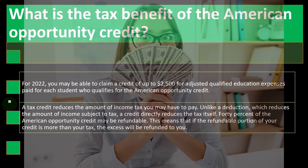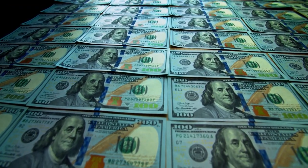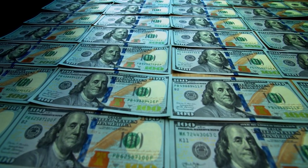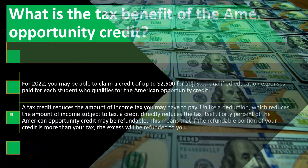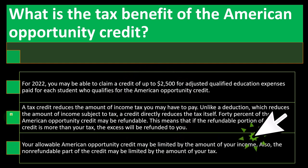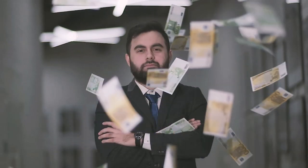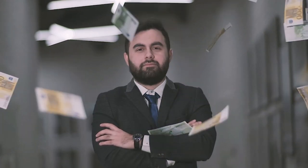Credits are typically better than deductions. Unlike a deduction, which reduces the amount of income subject to tax, a credit directly reduces the tax itself. The refundable portion could result in a refund even if you have no tax liability. Your allowable American Opportunity Credit may be limited by the amount of your income — it has a phase-out. If your income gets quite high, it could start to phase out. If your income is low, the non-refundable portion may go away, but you might still get benefit from the refundable portion.